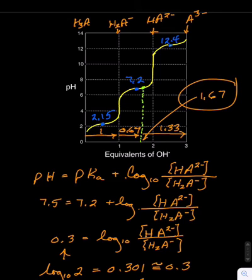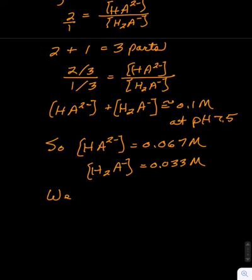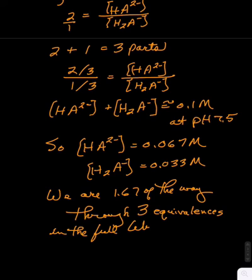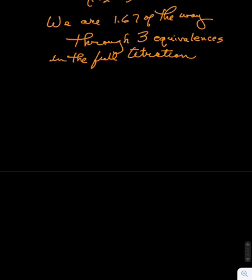That is, at pH 7.5, we are 1.67 of the way through the titration, with 1.33 of the titration left to go. That is to say, we are 1.67 over 3 of the way through the titration, with 1.33 over 3 to go.